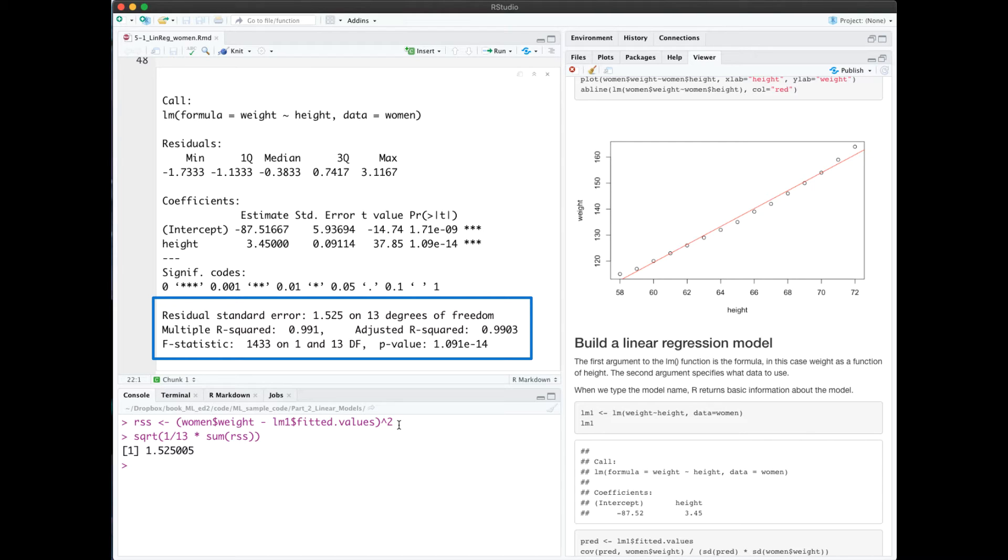The formula for RSE is in the book, but here I have it in code. It's the square root of 1 over 13 times the sum of the RSS. And we see we got the same number here, 1.525 as shown in the model.